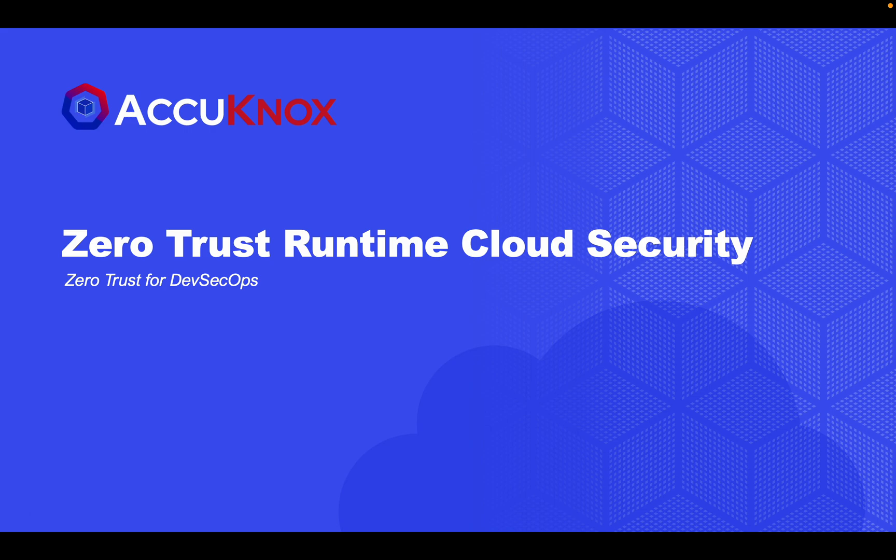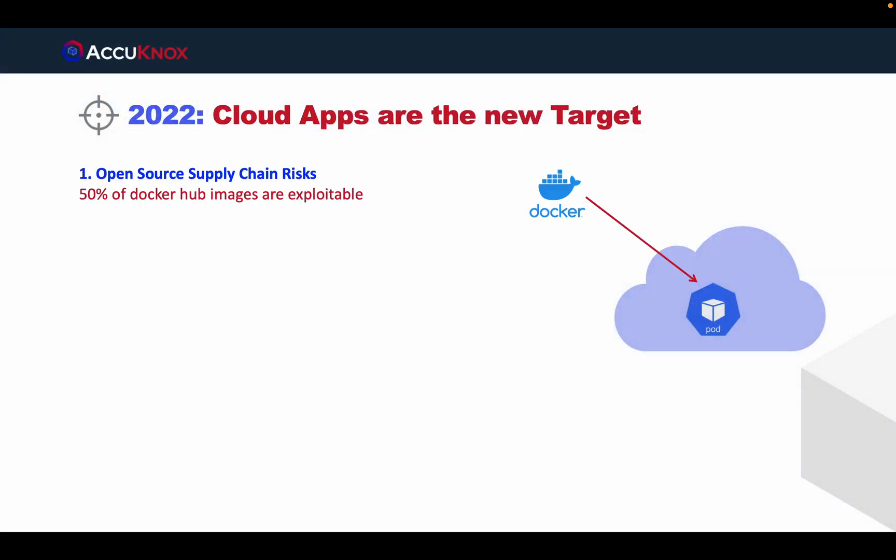Acunox's zero-trust runtime cloud security makes it easy for DevSecOps to get to zero-trust and stay there. Cloud infrastructure and applications are the new target for 2022. Last year, we saw supply chain risks skyrocket with 50% of Docker images being exploitable.